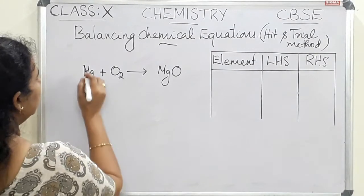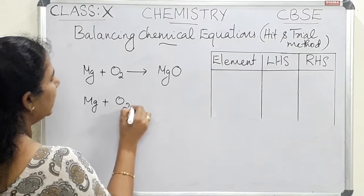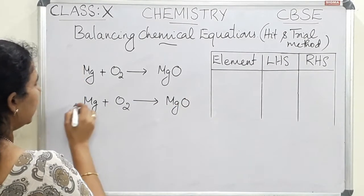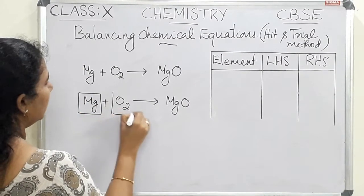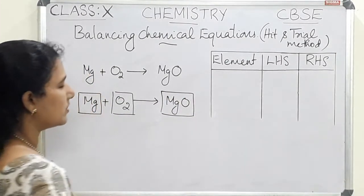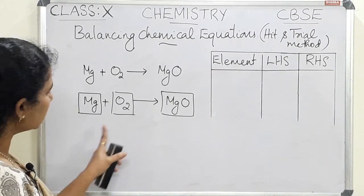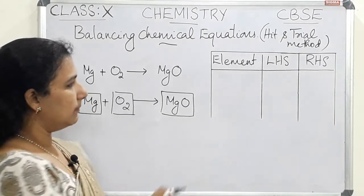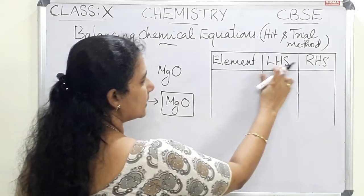First, we write the equation and draw boxes for each reactant and product. We draw a box for magnesium, a box for oxygen, and a box for magnesium oxide. Then we draw three columns: one for the element, one for the LHS, and one for the RHS.